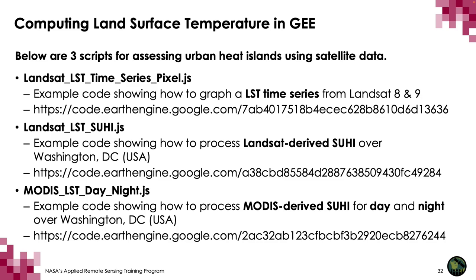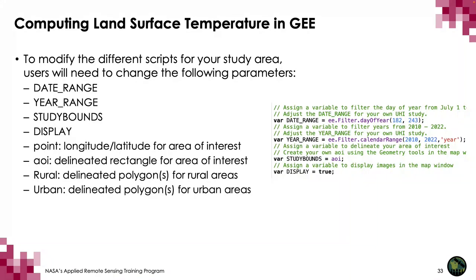The first script shows how to graph a land surface temperature time series from Landsat 8 and 9 for any user-specified longitude and latitude. The second script shows how to process Landsat-derived surface urban heat island over Washington DC, but can be adapted to any other city on the planet. The third script shows how to process MODIS-derived surface urban heat island for both day and night over Washington DC, also adaptable to any other city. The code for all three scripts has been commented throughout explaining which parameters need to be changed for your own area of interest.